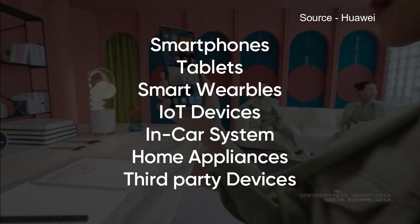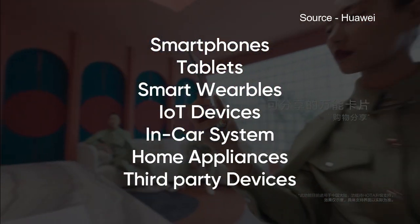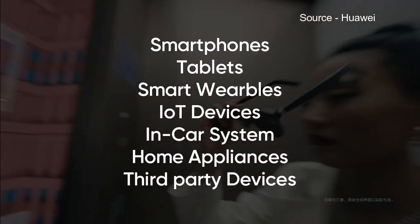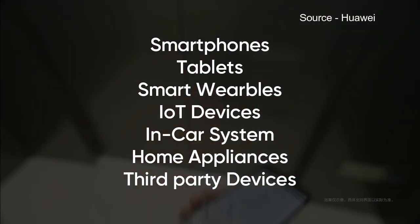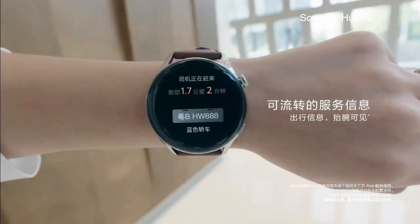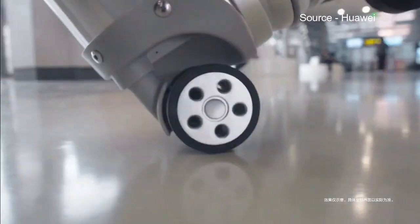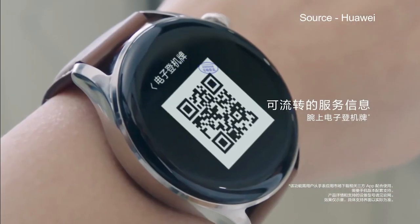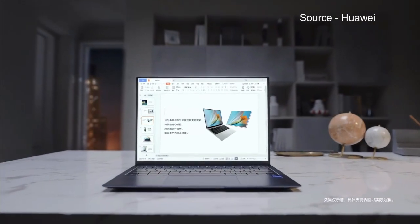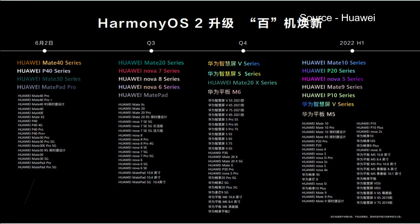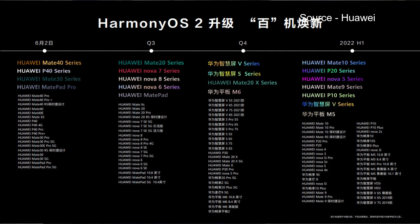These include smartphones, tablets, smart wearables, IoT devices, in-car systems, home appliances, and third-party devices. In 2021, Huawei planned to install HarmonyOS in 300 million devices, which is quite a big aim. To achieve it, the company laid out a HarmonyOS Upgrade Roadmap, which consists of 100 smartphones, tablets, and other devices.